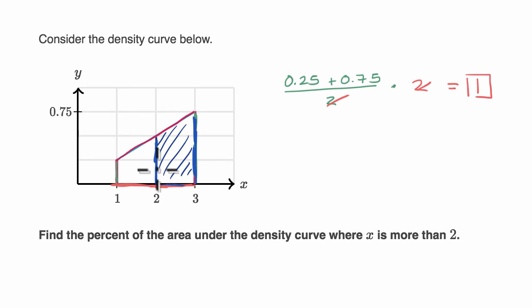So this side is 0.5 high, plus 0.75 high. And we're going to take the average of that, divided by two, times the base.